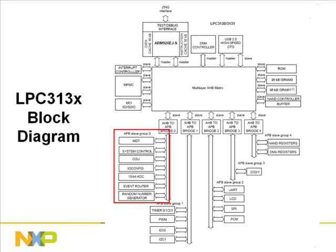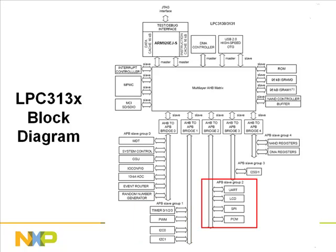Looking at key peripherals: APB slave group 0 includes the CGU unit that provides clocks to all modules, the 10-bit ADC, and the event router. Slave group 1 has timers and I2C interfaces. Slave group 2 has an LCD interface, SPI, UART, and PCM interfaces. Slave group 3 has I2S interfaces. A key point: the APB clock should be the same as the AHB clock.